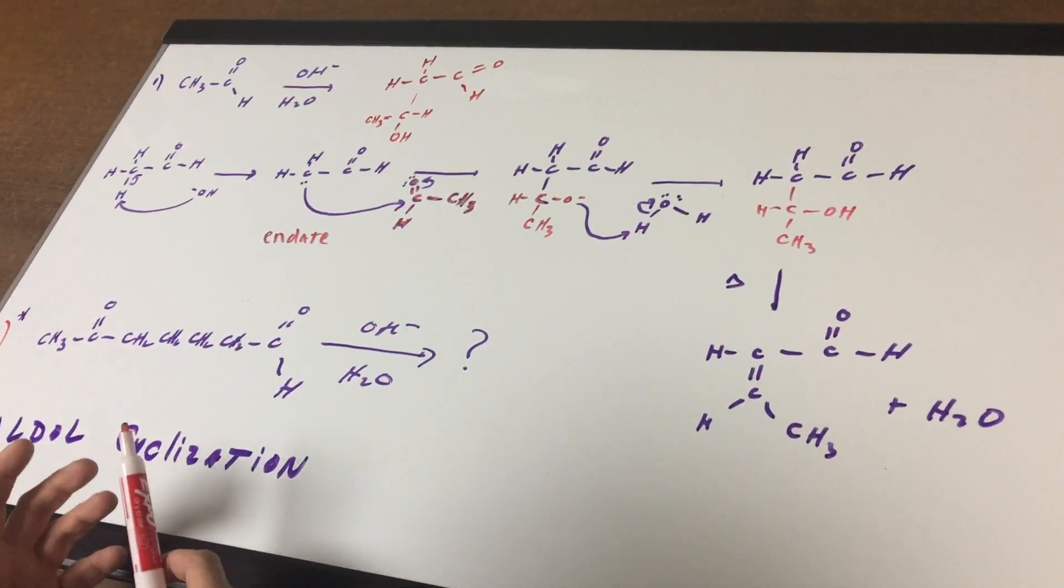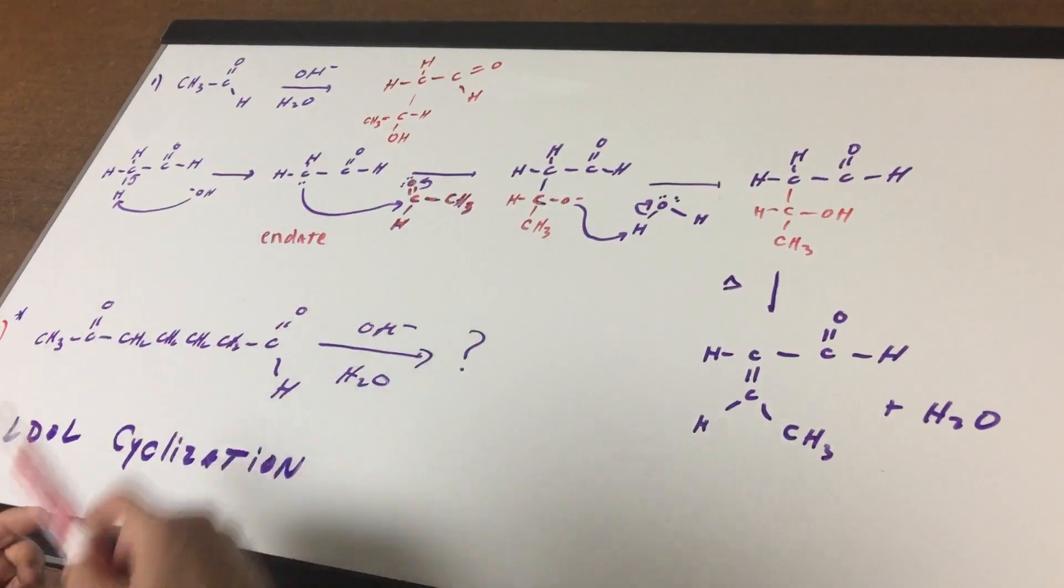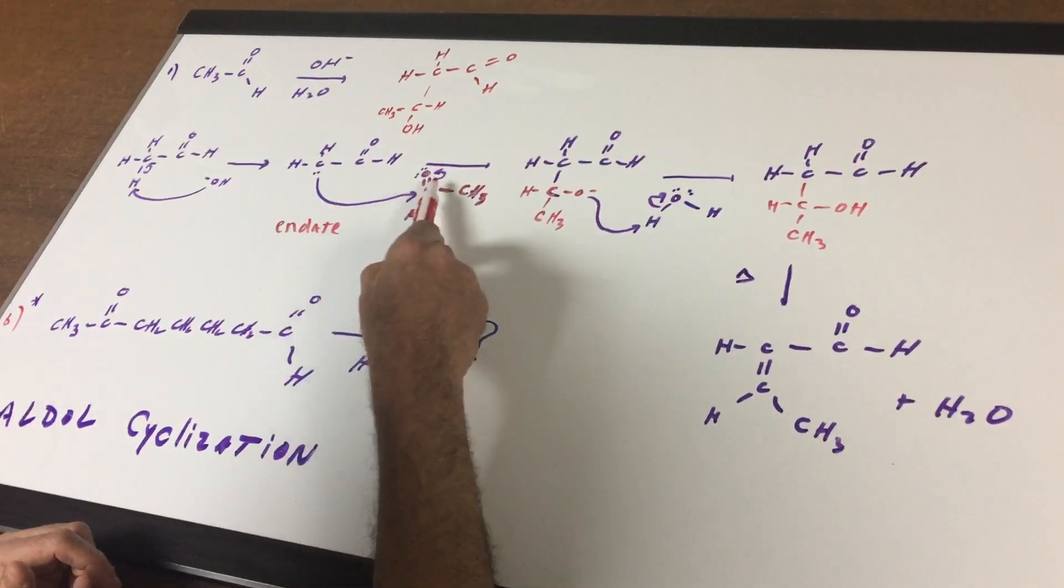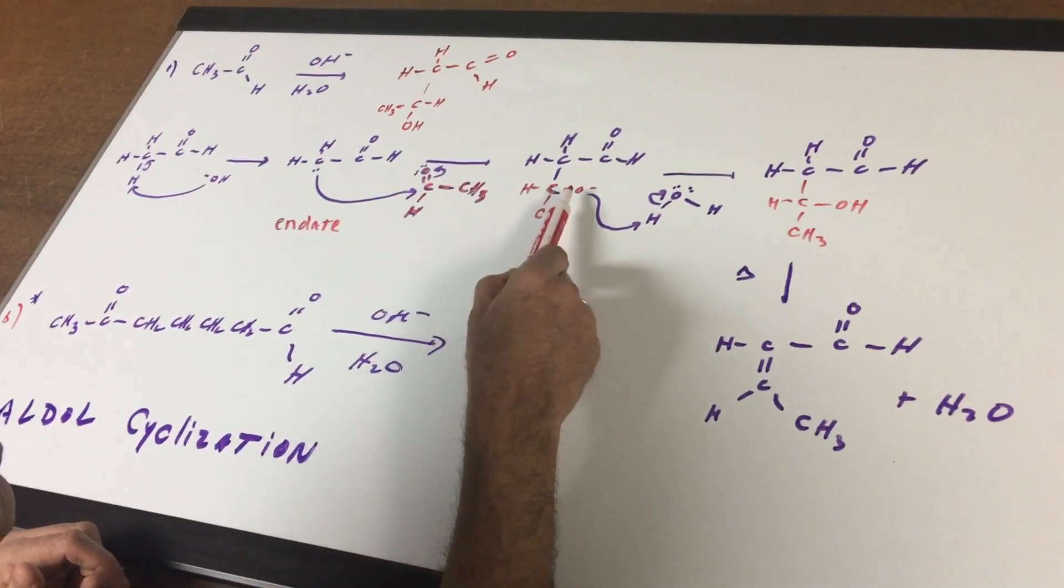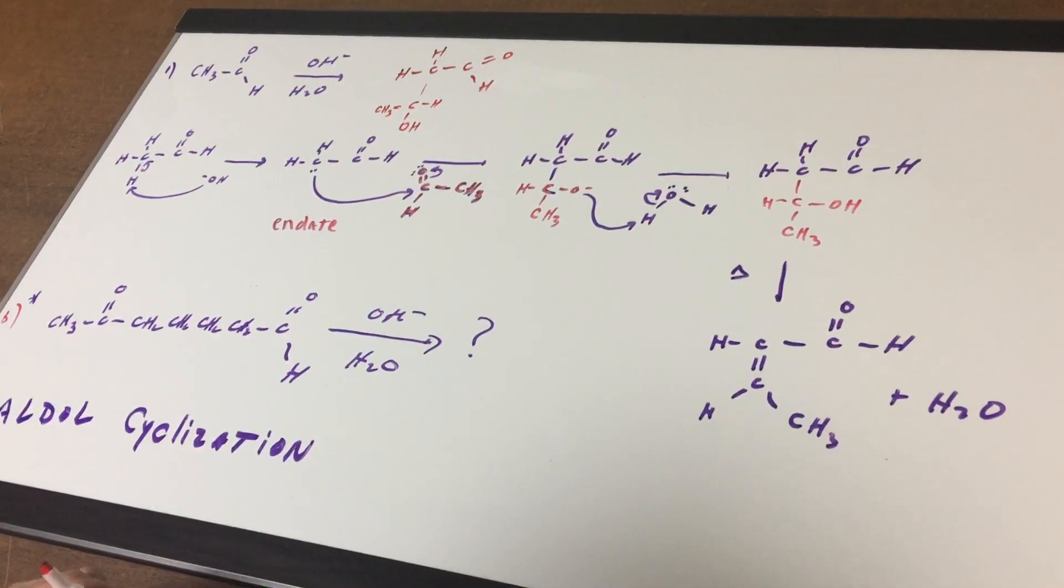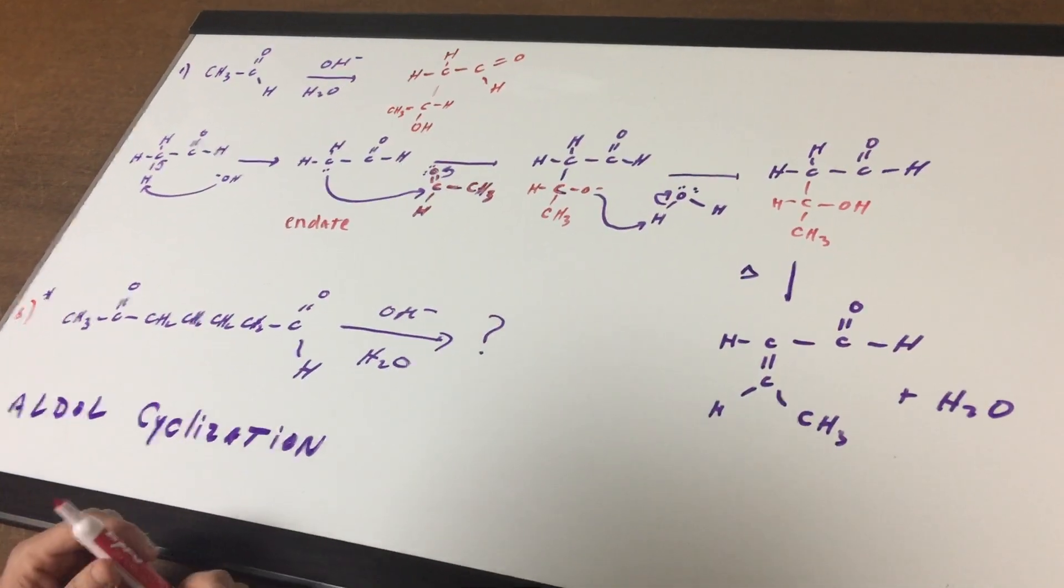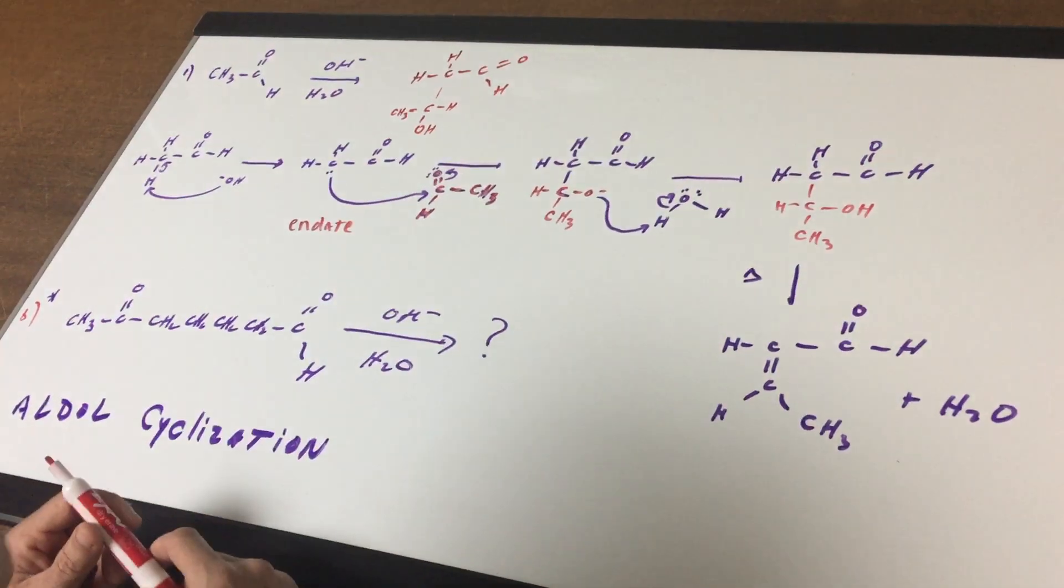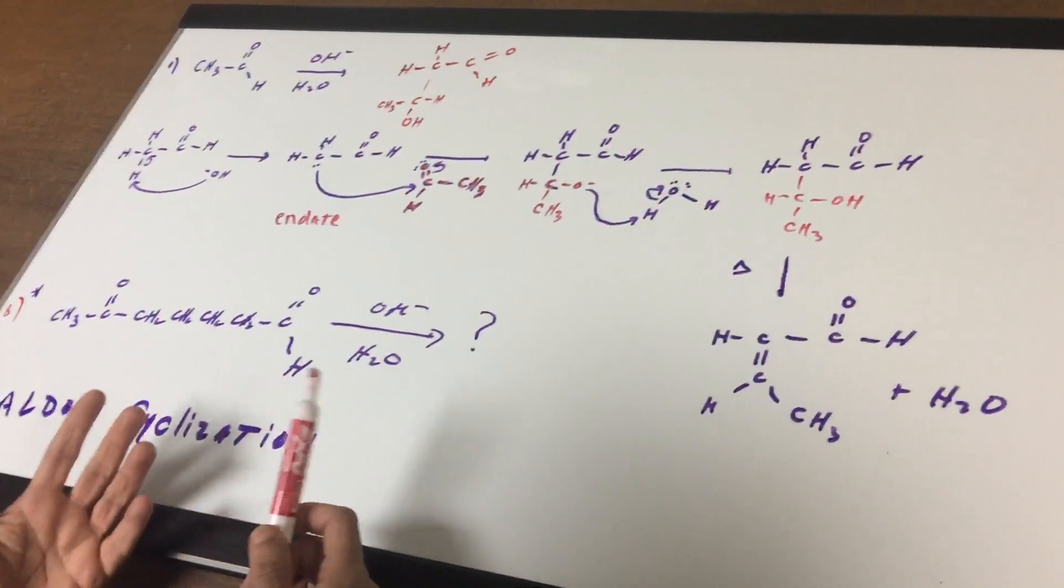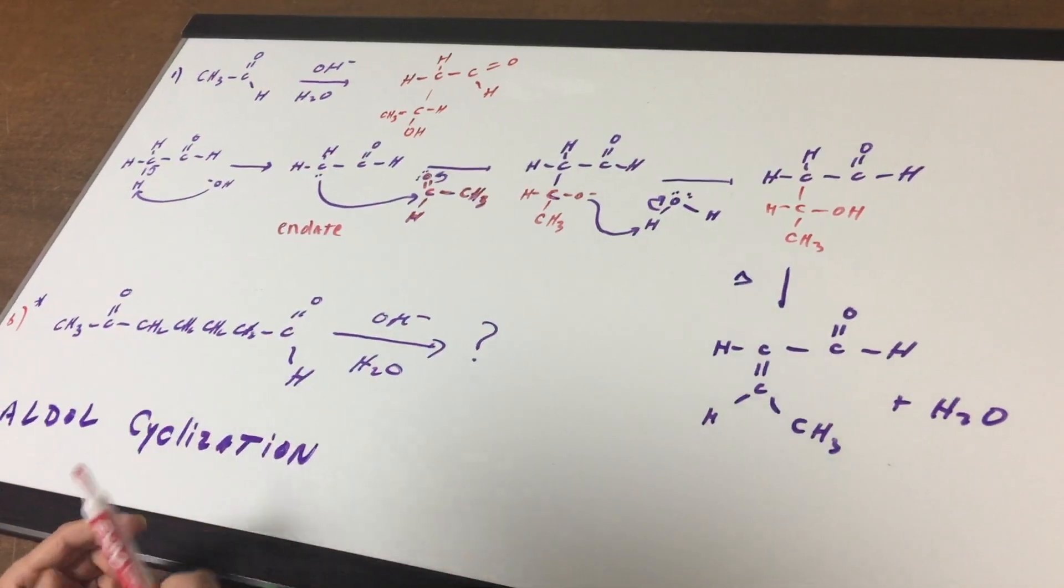Once you have the enolate formed, that enolate is now the nucleophile, and it attacks the second molecule of the aldehyde, which is the electrophile. There's the attack, electrons move out, and then finally you pick up a final H to finish off the final product. You should at least understand all these different steps on the aldol for the DAT exam. So remember, just remove the alpha hydrogen from one and attach it on to the carbonyl carbon of the second.